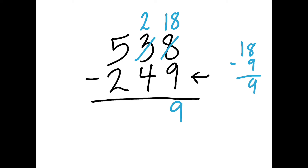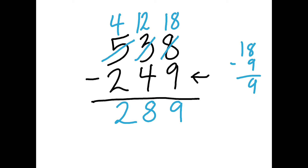Now I've solved the ones, so I'll go to my tens. I have 2 take away 4. I have more on the floor than I do on top, so I need to go over to my hundreds and borrow a 10. My 5 becomes 4, and I give my 2 a 10, so now that is 12. 12 take away 4 is 8. Now I can go to my hundreds: 4 take away 2 is 2. So the answer is 289.